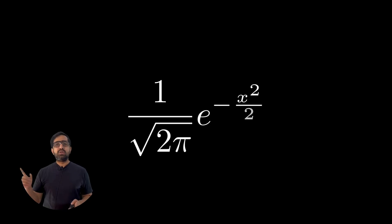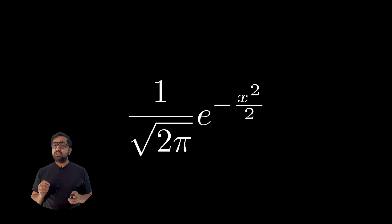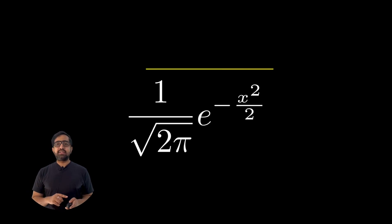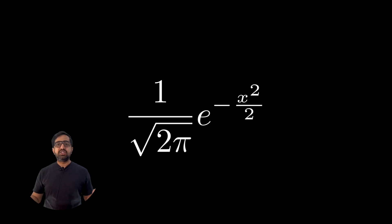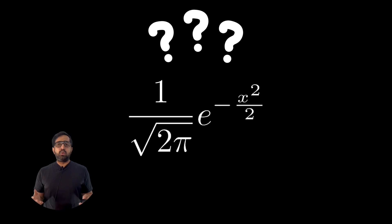This famous equation ruled the planet for centuries, which goes like 1 upon root 2π · e to the power minus x² / 2. Every major complex decision on this planet is taken by this equation. Do you know what it is and why it is?